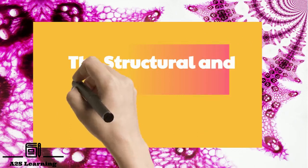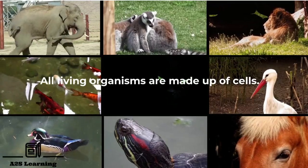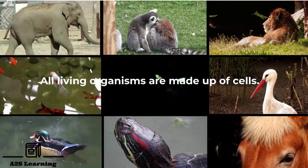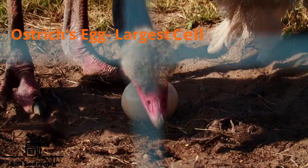A cell is defined as a structural and functional unit of living organism. All living organisms are made up of cells. Cells are found in different shapes and sizes. Ostrich's egg is the largest cell and nerve cell is the longest cell.